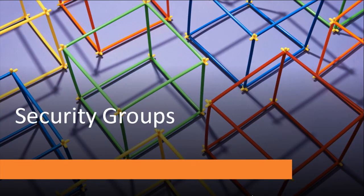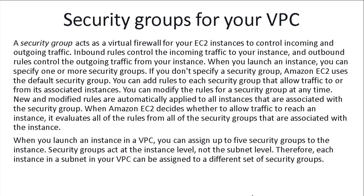So let's start Security Groups on AWS. A Security Group is basically a virtual firewall for your Virtual Private Cloud. A Security Group acts as a virtual firewall of your EC2 instance to control incoming and outgoing traffic.